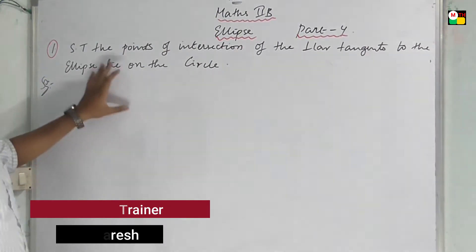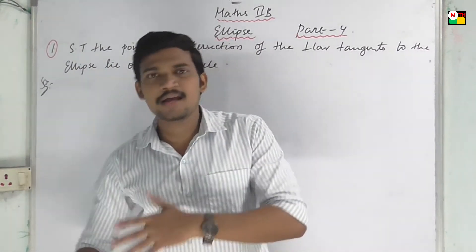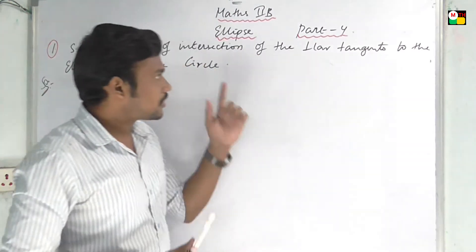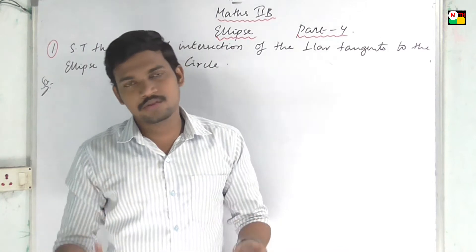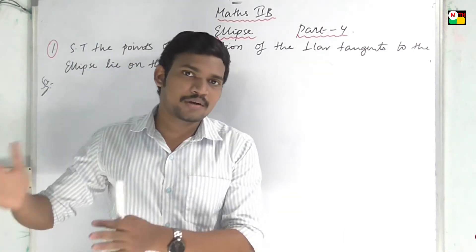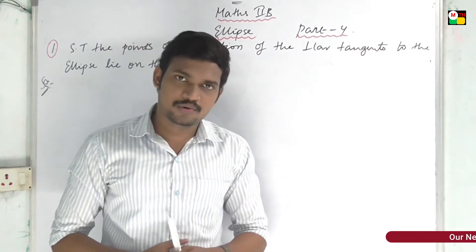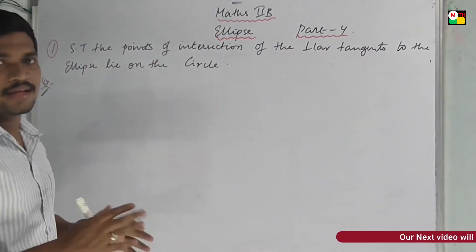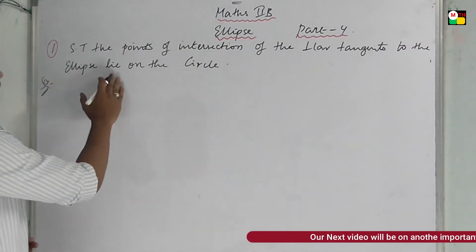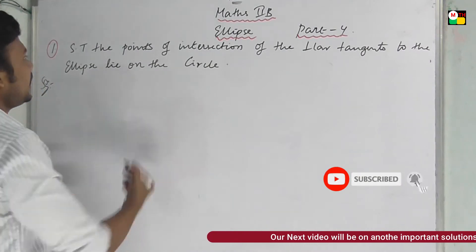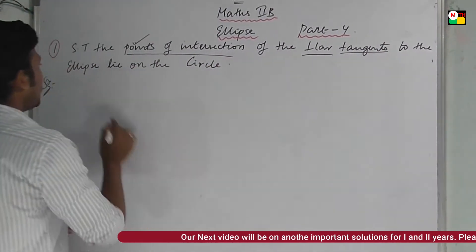Now we will choose Part 4. First important question: show that the points of intersection of the perpendicular tangents to the ellipse lie on a circle. You can observe the points — the perpendicular tangents to the ellipse lie on the circle.